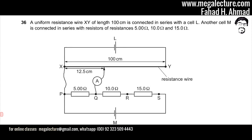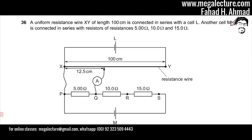A uniform resistance wire XY of length 100 cm is connected in series with a cell L. Since it's a uniform wire, the resistance is also uniform. Another cell M is connected in series with resistances of 5 ohms, 10 ohms, and 15 ohms — all in series.